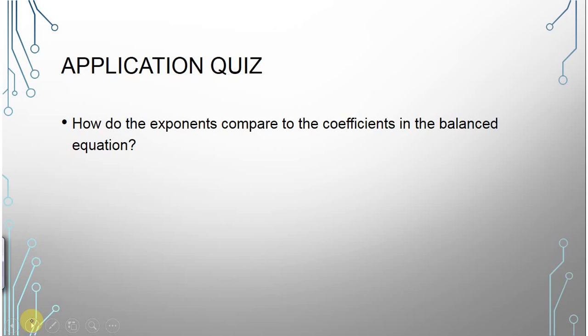Application quiz: how do the exponents compare to the coefficients in the balanced equation? The answer is they don't. There is absolutely no correlation between the coefficients in the balanced equation and what the rate law is. It has no basis. The whole point is that you have to find your exponents experimentally.